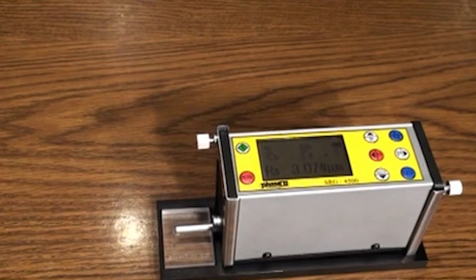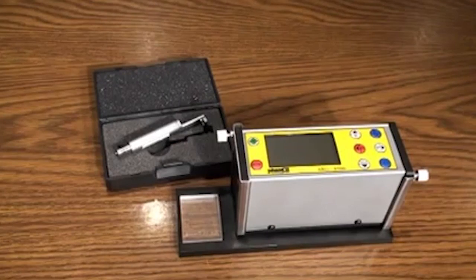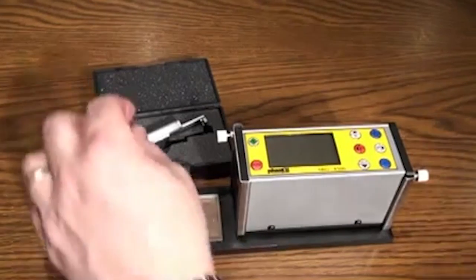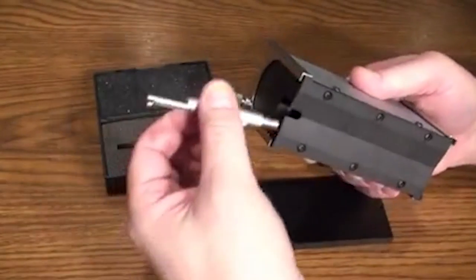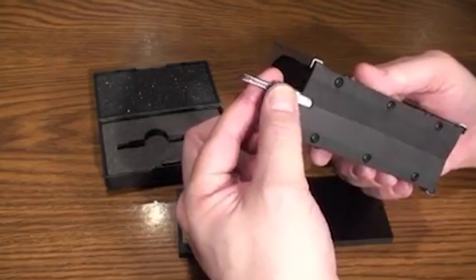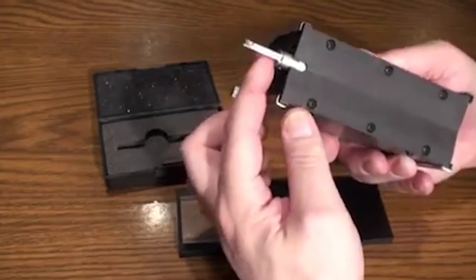As you can see, the SRG-4500 is a handheld battery-powered instrument with graphic display and controls on top and an extended stylus which will retract and extract upon taking surface roughness samples automatically. To begin, insert the stylus that is supplied in a separate container for optimum protection. Make certain to line up the plug and press easily into the socket.